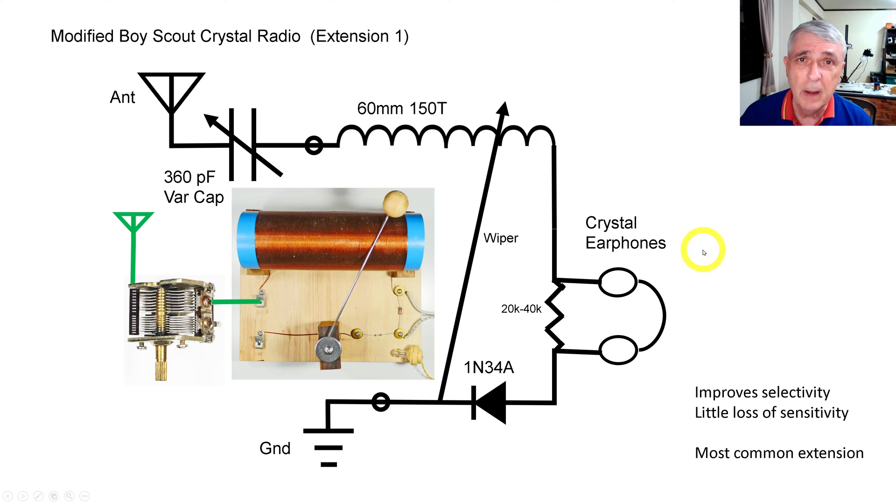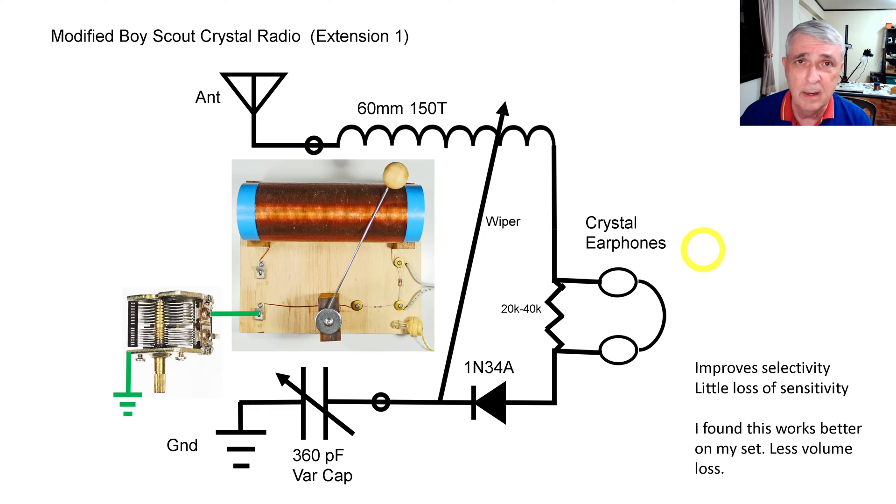However, I have found that on my radio, I don't know whether it's because of the antenna or ground system or the radio, I found that it works better when I put it in the ground. Now this is part of the fun of crystal radios. You get to experiment and there's no cost of doing this. You just move your jumpers, you move your wires over. So I have put the capacitor, the air variable capacitor, in the ground circuit rather than in the antenna circuit.